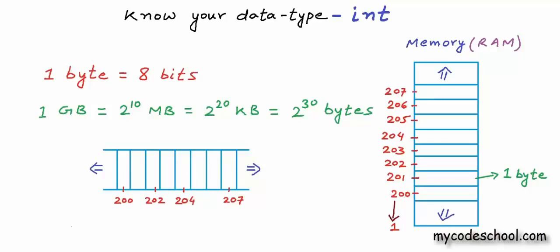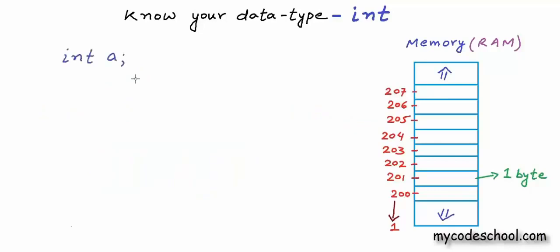Coming back to our original question: when we declare a variable, we basically reserve some amount of memory to store data. The amount of memory reserved depends on the data type, the compiler, and the machine architecture. For int in a typical architecture, we get 4 bytes. For a variable named A, we might get a block of 4 bytes starting at address 203. We always get a contiguous block of memory for a variable. With the statement assigning value 12, we are filling that value into this block of memory.